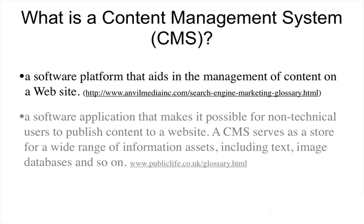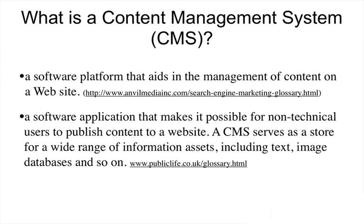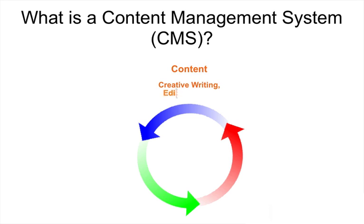A slightly better definition is it's a software application that makes it possible for non-technical users to publish content to a website. It serves as a store for a wide range of information assets — text, images, databases, videos, etc. Let's take a look at what a content management system looks like. A CMS splits all of your website into basically three different aspects or areas. First is content — it's what you put into your site: the creative writing, the editing, maybe some HTML, some PHP, CSS, whatever goes into your content items. Those are all stored in a database.